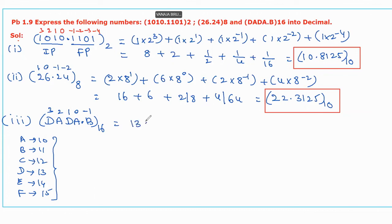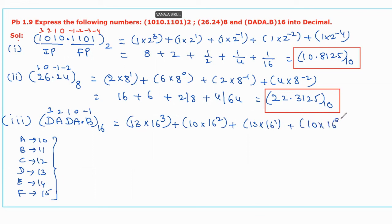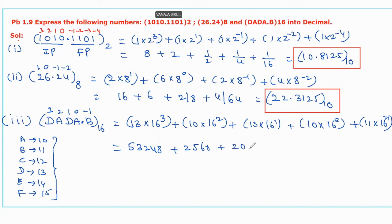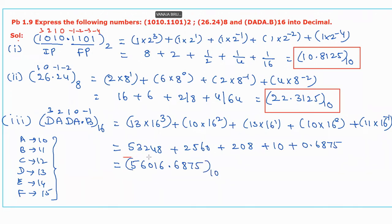D means 13, so 13 into 16 cubed, plus A means 10 into 16 squared, plus D means 13 into 16 power 1, plus A means 10 into 16 power 0, plus B means 11 into 16 power minus 1. Its equivalent value becomes 53248 plus 2560 plus 208 plus 10 plus 0.6875. The total becomes 56026.6875 with base 10. This is the required decimal value for the given hexadecimal number.